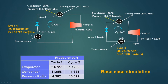Similarly for cycle 1, the evaporator operates at minus 23.8°C and 2.6727 bar. The vapor must be compressed to 11.658 bar to reject heat to cooling water at 20°C maximum, giving a pressure ratio of 4.362. Comparing the two cycles: cycle 1 evaporator is at 2.6727 bar, cycle 2 is at 1.1232 bar, and both condenser pressures are 11.658 bar. Cycle 1 has a pressure ratio of 4.362 and cycle 2 has 10.379. This is the base case simulation.